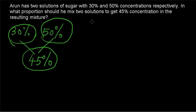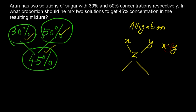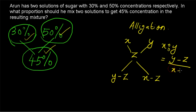How do we solve this problem? Whenever a combination comes — here 30% and 50% combined to form a 45% sugar solution — we can use the rule of allegation. According to the rule of allegation, when x and y are combined together to form z, then the proportion of x to y is given by: x to y equals (y minus z) to (x minus z).